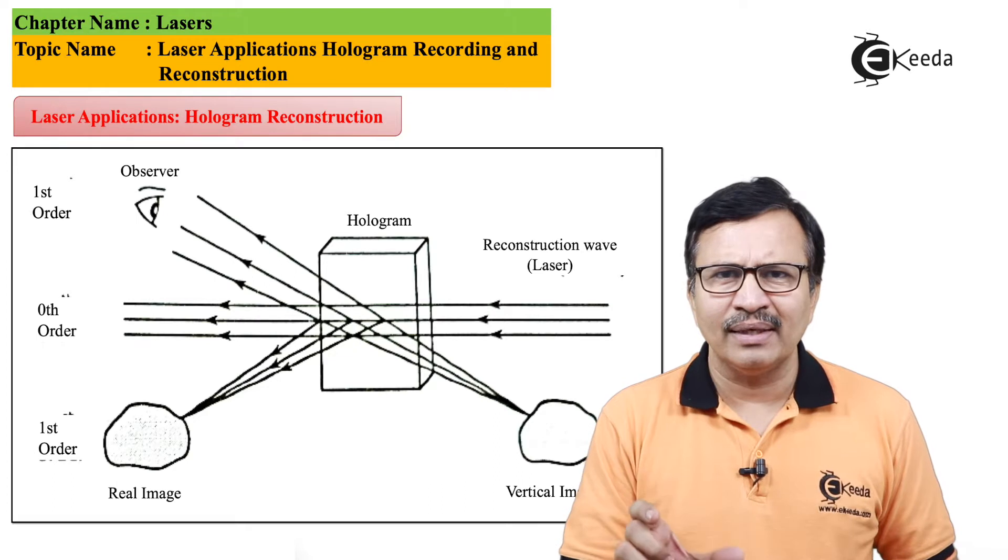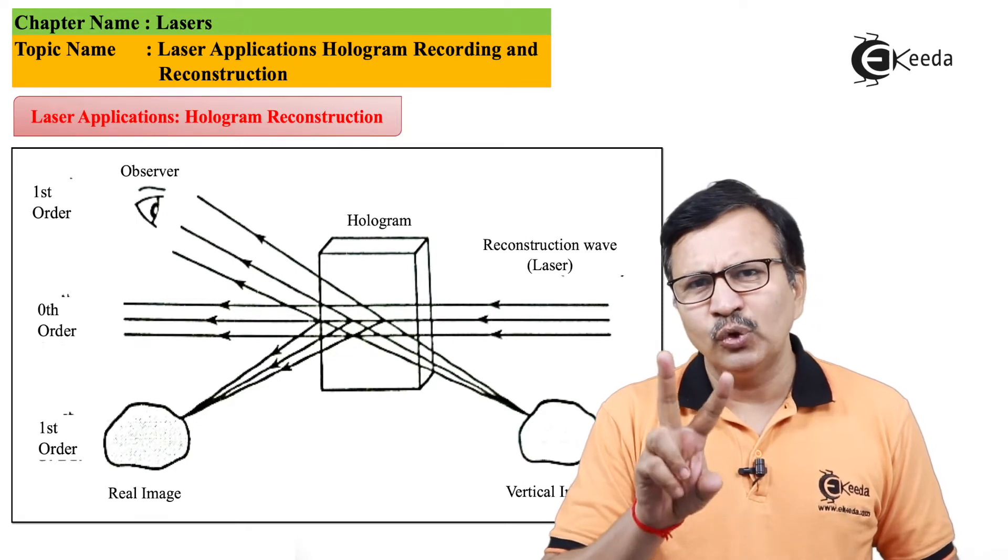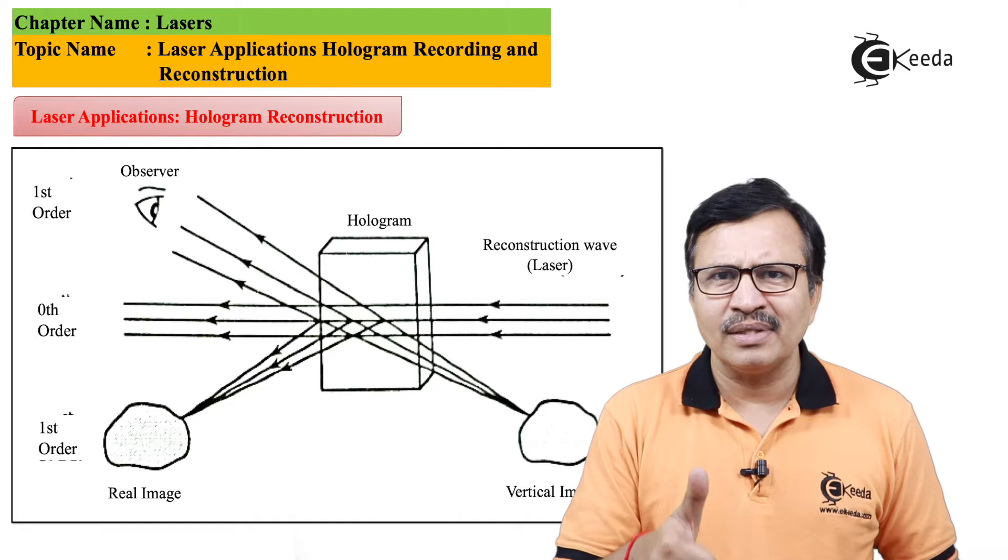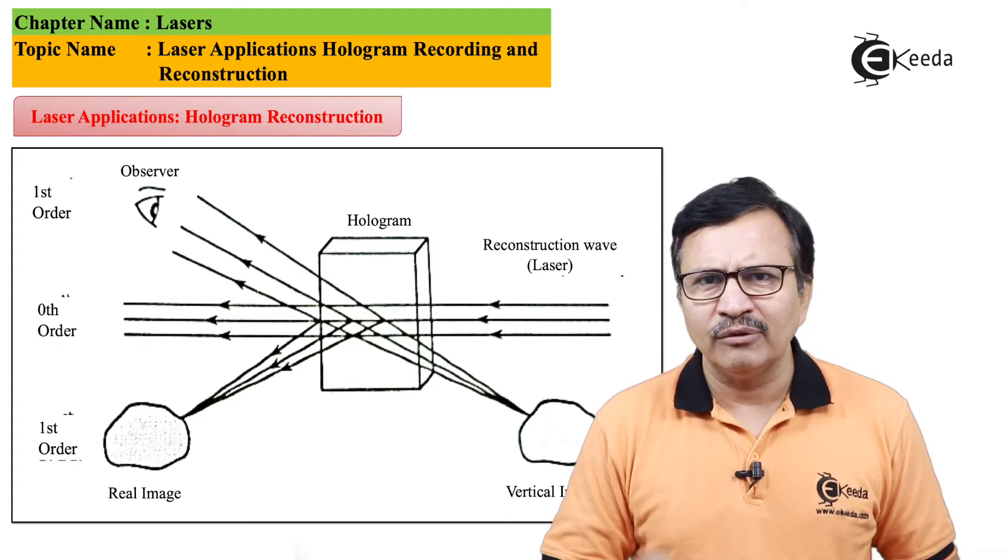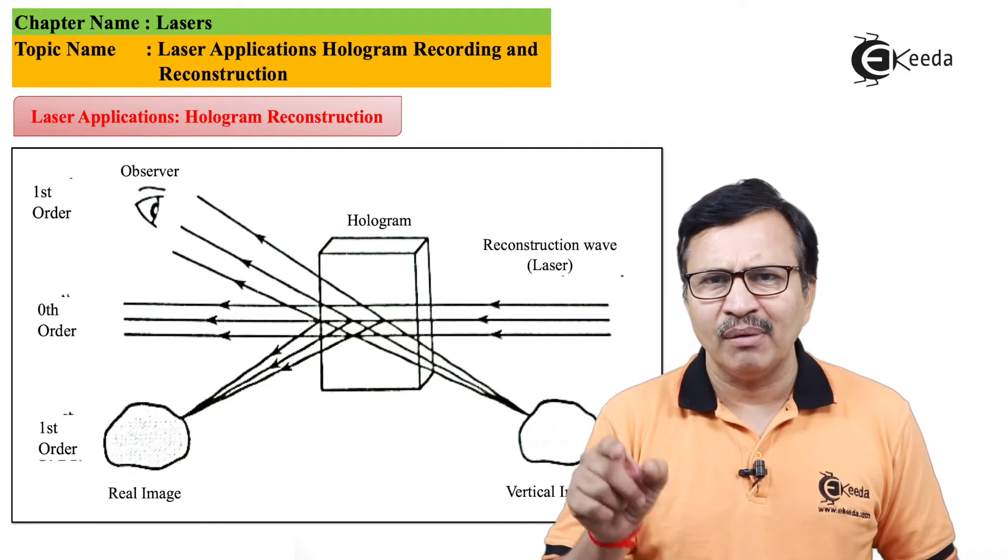And since it behaves like a diffraction grating, it gives you two types of images. One type of image is the real image which is forming at the first order diffraction maxima.